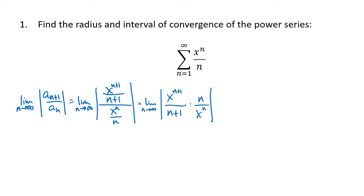We're using the ratio test because the x terms will simplify. The x to the n on the bottom divides out with the x to the n+1, leaving just one factor of x on the top. There's no other simplification we can do, but we know that n is always positive, so the absolute value isn't going to do anything to the n terms. We just have the absolute value of x multiplied by n over n+1.